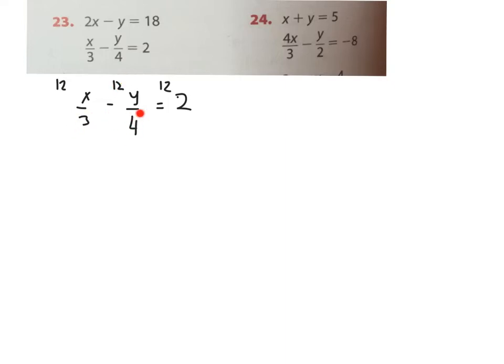Now, 3 goes into 12 four times, so you're left with 4x. 4 goes into 12 three times, so you're left with 3y. I don't divide the 2 into the 12 because the 2 is not a denominator—you can only do this with denominators. Multiplying all of these out gives us 4x - 3y = 24.